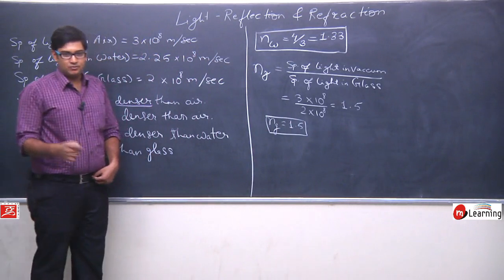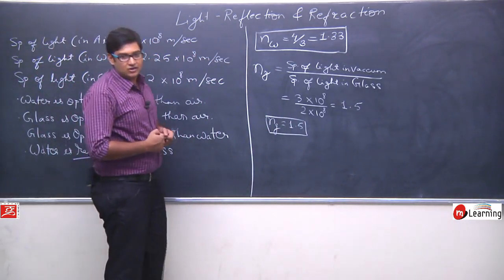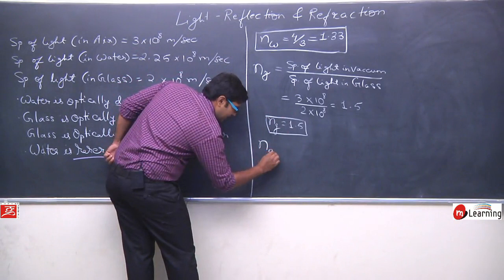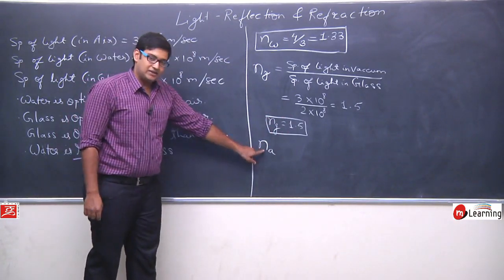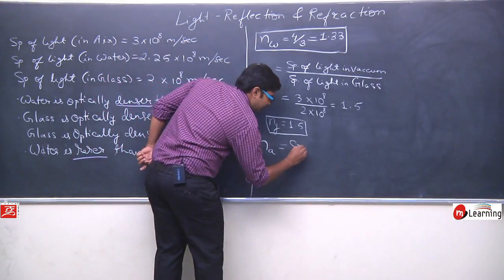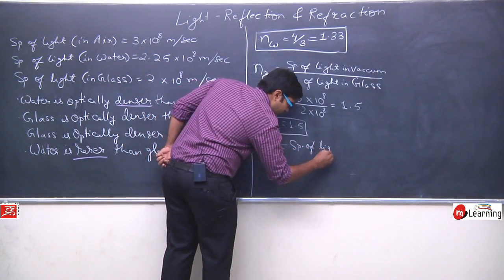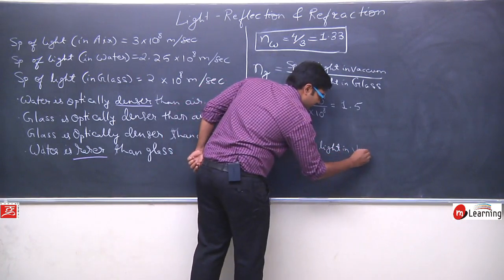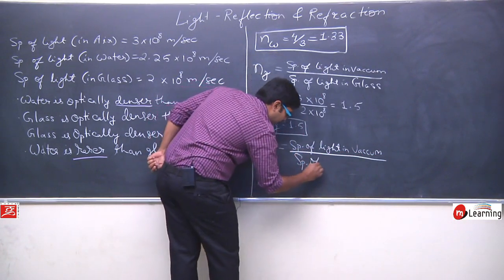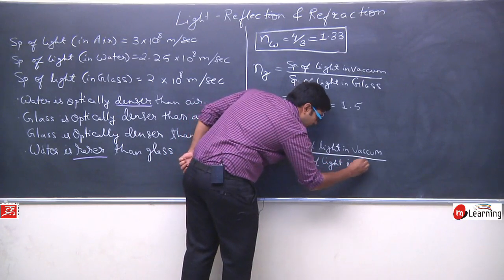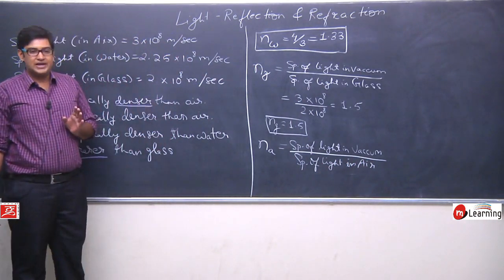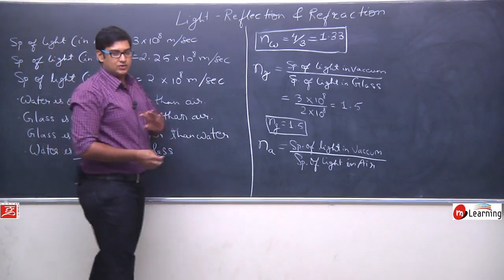Refractive index of glass is 1.5. Kya hum air ka bhi refractive index calculate kar sakte hai? Yes, we can calculate this. So let us calculate refractive index of air. NA se hum ne represent kiya — N is refractive index, A is the medium and medium is air. So I will write speed of light in vacuum upon speed of light in air.